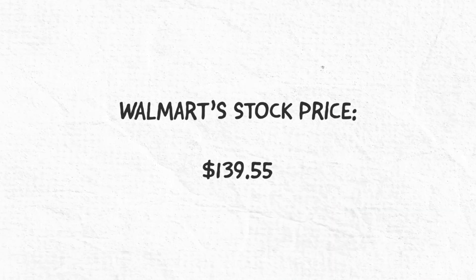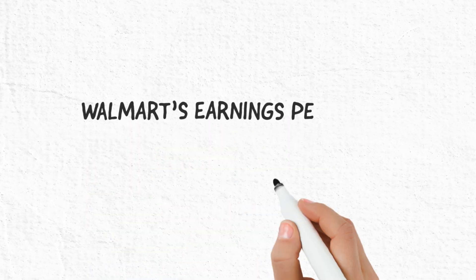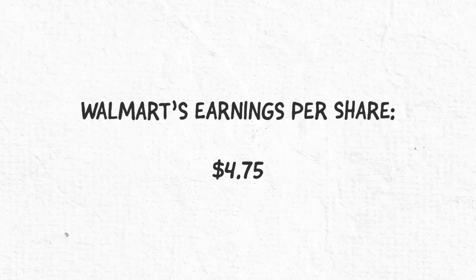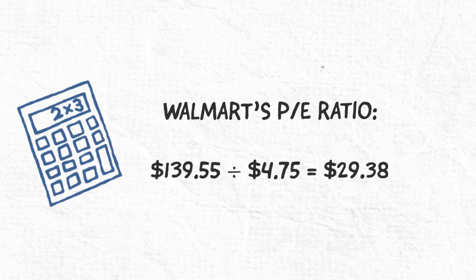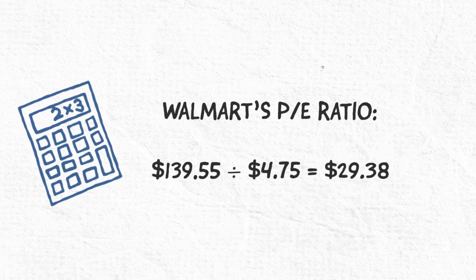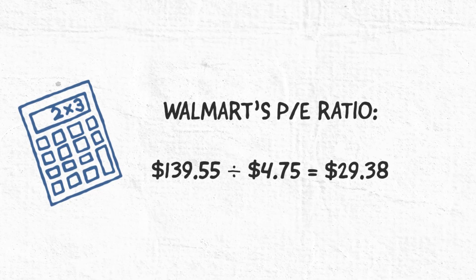Let's calculate the P/E ratio for Walmart. As of February 3rd, 2021, Walmart's stock price closed at $139.55 according to the Wall Street Journal. For the fiscal year ending January 31st, 2021, their earnings per share was $4.75. Therefore, Walmart's P/E ratio, calculated as $139.55 divided by $4.75, gives them a P/E ratio of 29.38. However, the 29.38 P/E isn't helpful unless you have something to compare it with.